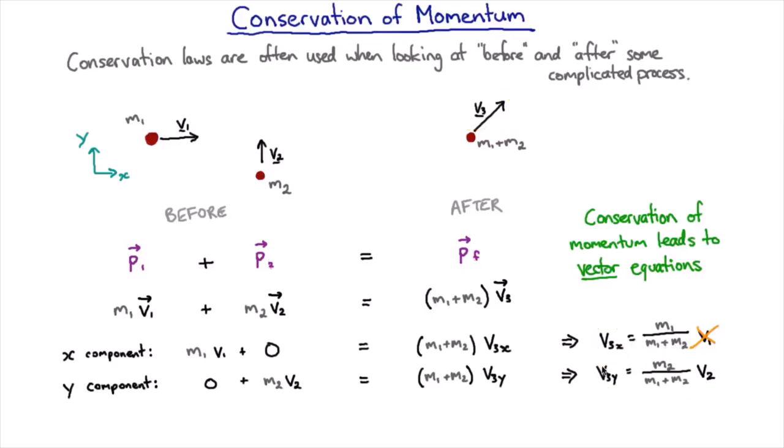However if this mass say was zero we'd expect no matter how fast it was going it wouldn't really change the trajectory of the first particle.